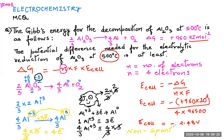Since ΔG is positive and E_cell is negative, this is a non-spontaneous redox reaction — we are talking about an electrolytic cell. That's all for today's video. Bye-bye, take care, and love and blessings to all of you.